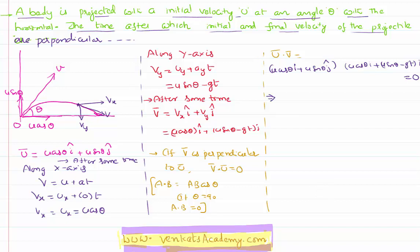You know how to find a dot product? You have to multiply x components of both the vectors and add that to the multiplication of y components of both the vectors. So, u cos theta and u cos theta x components. So, u square cos square theta plus u sin theta of the first one and u sin theta minus gt of the second one. That product has to be equal to zero.